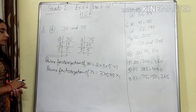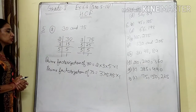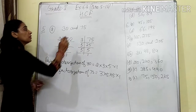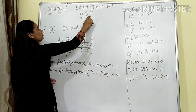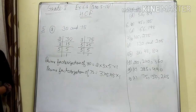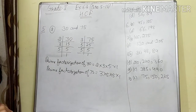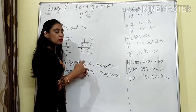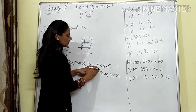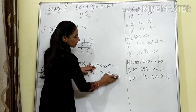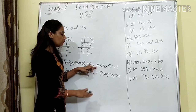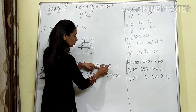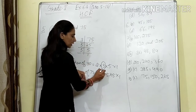Now in the prime factorization, we will select the common factors. Because the name is HCF — Highest Common Factor. We have to take the common factors here. Look at how to select the common ones. There is 2 in 30, but 2 is not in 75, so it is not common. Now 3 — 3 is here and here also, so 3 is a common factor in both.